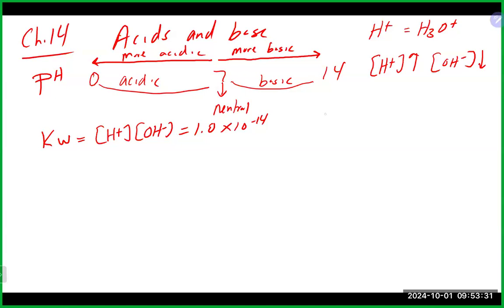We also talked about calculating pH. pH equals minus the log of the H+ concentration, or H3O+. You want to make sure you are using your exponent button in this chapter. Calculator-wise, if you have a display calculator where hitting log shows 'log,' you punch it in exactly as shown.